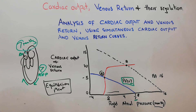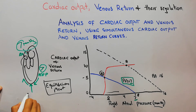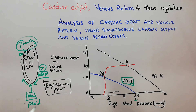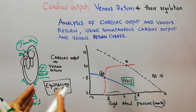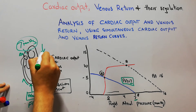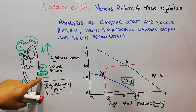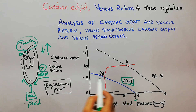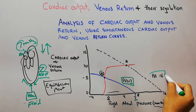Now we are going to increase the mean systemic filling pressure by injecting extra fluid into the system. This fluid fills the blood vessels, decreasing resistance and increasing filling, which raises the mean systemic filling pressure. In this diagram, after injecting the extra volume, the mean systemic filling pressure has increased from 7 to 16 mm of mercury.